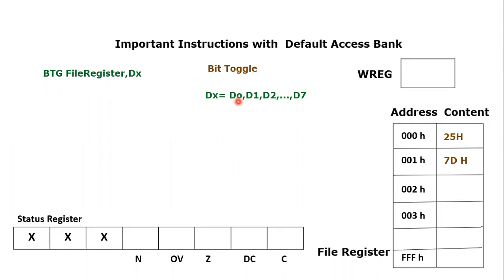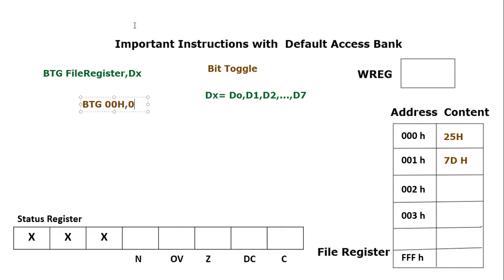For example, one can actually write: BTG file register 00h, comma D0 — or simply zero bit — which means the zero bit of file register 00h will be toggled. So let's say file register 00h has a value of 0x25.